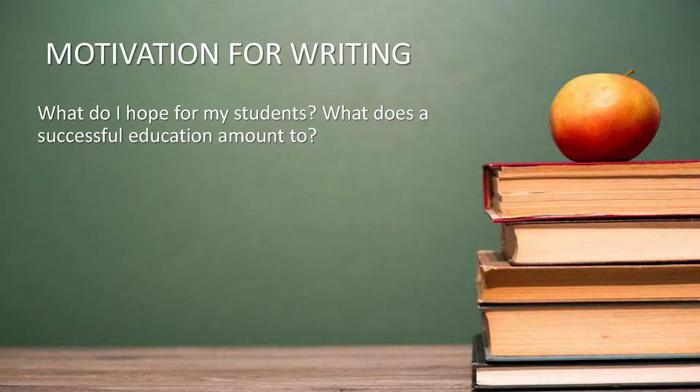The book began its life as a paragraph in the teaching statement I wrote when I went on the academic job market. Writing that statement got me asking questions like: ultimately, what do I hope for my students? What does a successful education really amount to? The first thing you've got to say is knowledge — educated people are expected to know certain things. But having a lot of knowledge doesn't suffice for a complete education. People can have a lot of knowledge but have no clue how to put it together, or be very bad at reasoning their way to new knowledge.